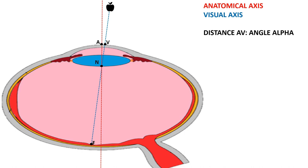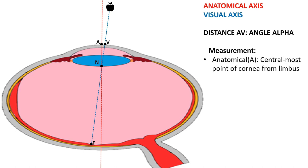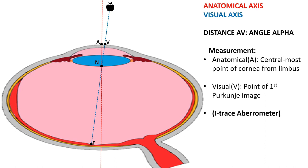How can angle alpha be measured? Most corneal measurement devices can locate point A, since it is the central most point of the cornea measured from the limbus. Point V is basically the corneal light reflex from the first Purkinje image reflected from the anterior surface of the cornea — when we shine a torch on the cornea, the central white reflection is the reflection from the visual axis. An aberrometry device like the Eye Trace is capable of finding the exact location of the center of the cornea as well as the first Purkinje image, hence it can measure angle alpha. Normally, angle alpha is less than 0.3 millimeters, which is clinically insignificant.